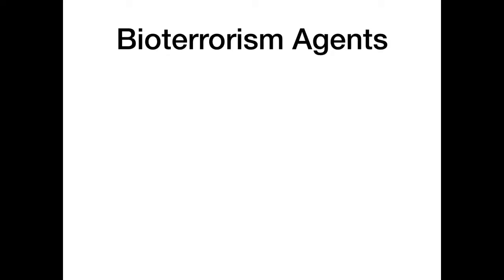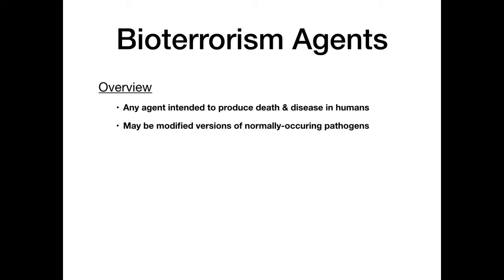This lecture is going to teach you everything you need to know about bioterrorism agents. We're not going to review agents already found in other books — we're going to cover the ones that are not in review sources. A bioterrorism agent is any agent intended to produce death or disease in humans. Oftentimes a government will take an agent — a bacteria, a virus, or a toxin — and weaponize it, producing it in mass quantity for potential use in warfare.